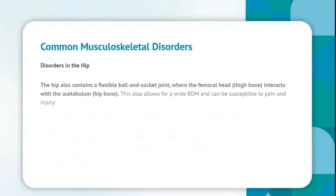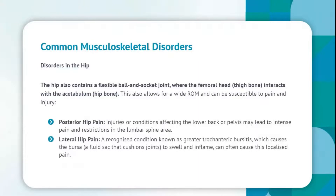Disorders in the hip: the hip contains a flexible ball and socket joint, where the femoral head (thigh bone) interacts with the acetabulum (hip bone), allowing for a wide range of motion but susceptible to pain and injury. Posterior hip pain: injuries or conditions affecting the lower back or pelvis may lead to intense pain and restrictions in the lumbar spine area. Lateral hip pain: a condition known as greater trochanteric bursitis causes the bursa, a fluid sac that cushions joints, to swell and inflame, often causing this localized pain.